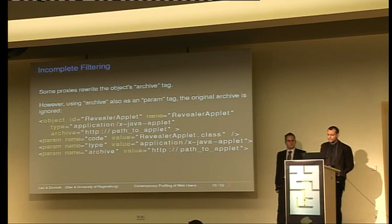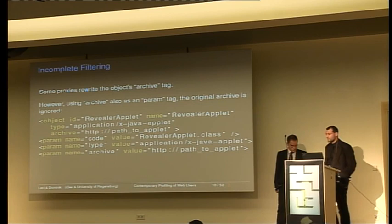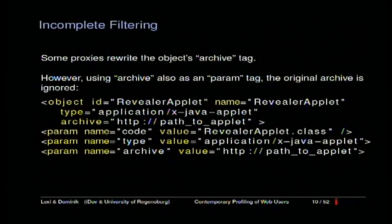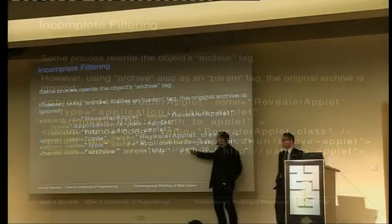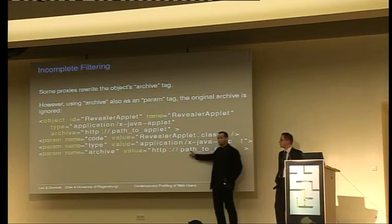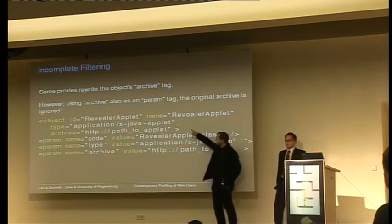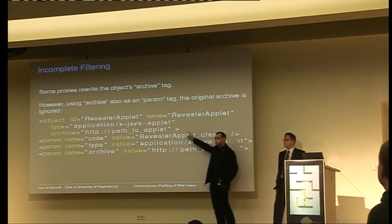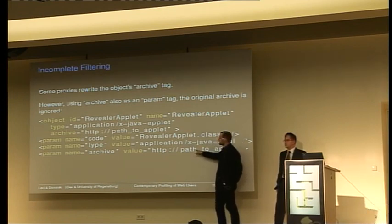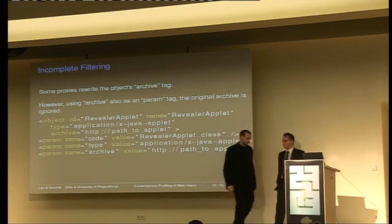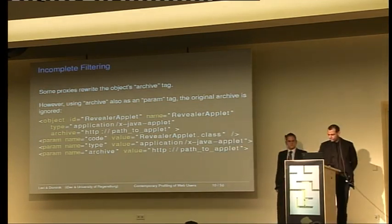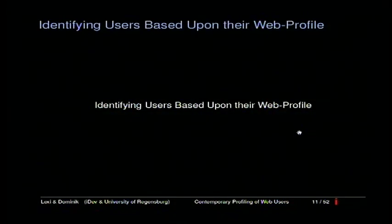Finally, some proxies do filter Java applets or Flash applets, but they just filter the original path in the object tag. What the coders of those proxies did not know is that if you put the path a second time down in the param tags, the filtered one gets completely ignored and the param tag path is actually used. So it makes no sense to filter only the top-level path.